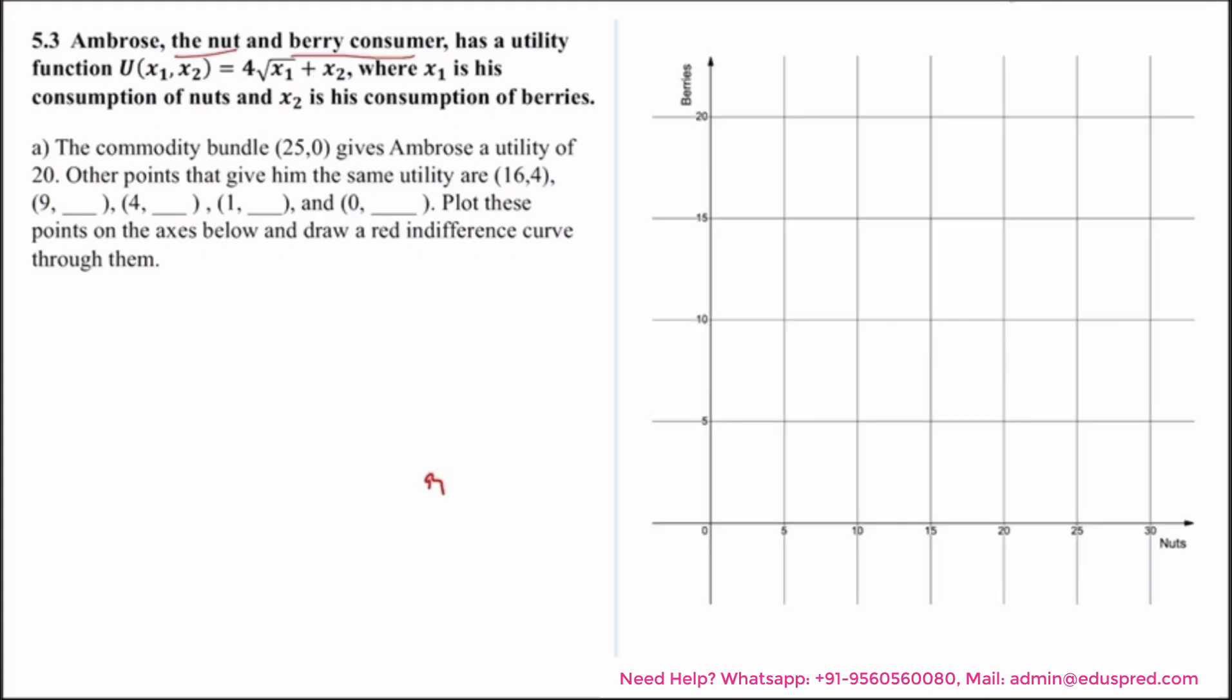So firstly this is the graph given to us where on the x-axis we have nuts, on the y-axis we have berries. For plotting the indifference curve, firstly we need to find all these points. We want the utility of 20. The first point that gives Ambrose the utility of 20 is (25, 0). So let's plot that. That means Ambrose is consuming 25 units of nuts and 0 units of berries.